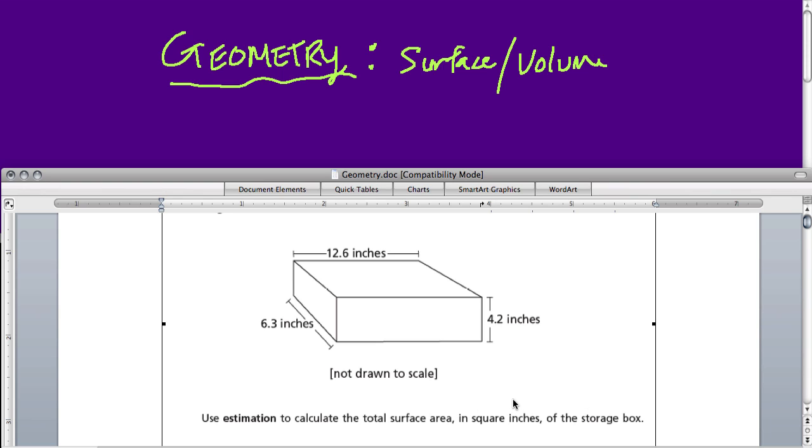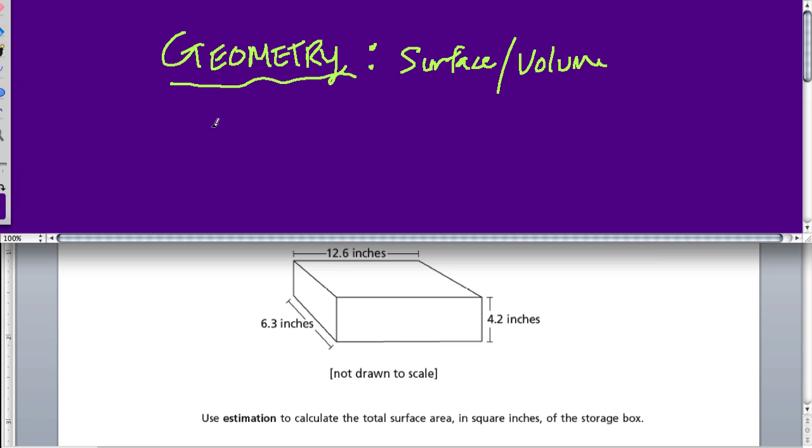They want us to use estimation to calculate the total surface area in square inches of the storage box. Square inches is the measurement that talks about how much surface we have. A square is a flat shape that can be put onto any surface. So if I have a cube or a rectangular prism, and I want to find out how much surface area it has, what I'm really doing is finding out how many squares cover the surface of this shape.